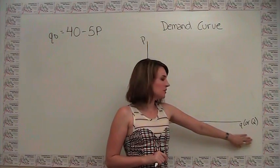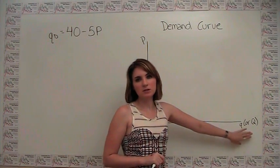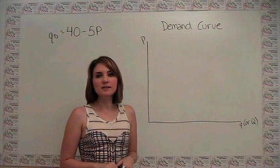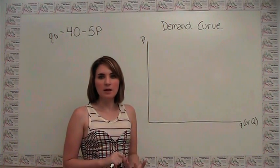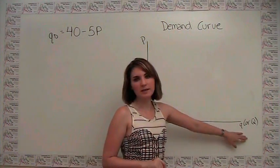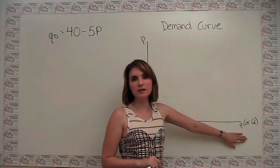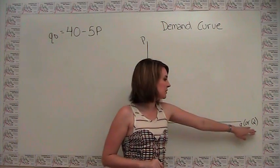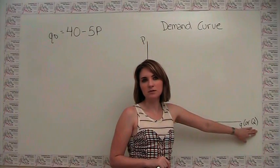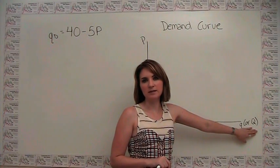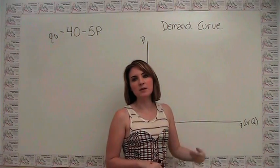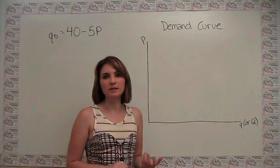You'll notice here that I labeled both a lowercase q and an uppercase q. The distinction that we make in economics a lot of the time is that we use the lowercase q to refer to individual demands, and we use the uppercase q to refer to market demands. The same concepts are going to hold when we talk about individual supply versus market supply.